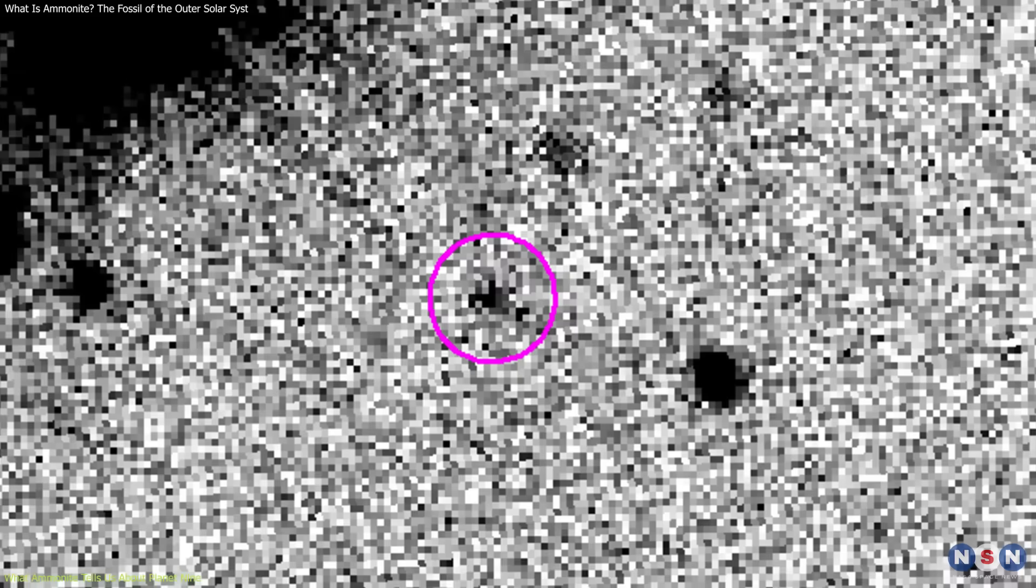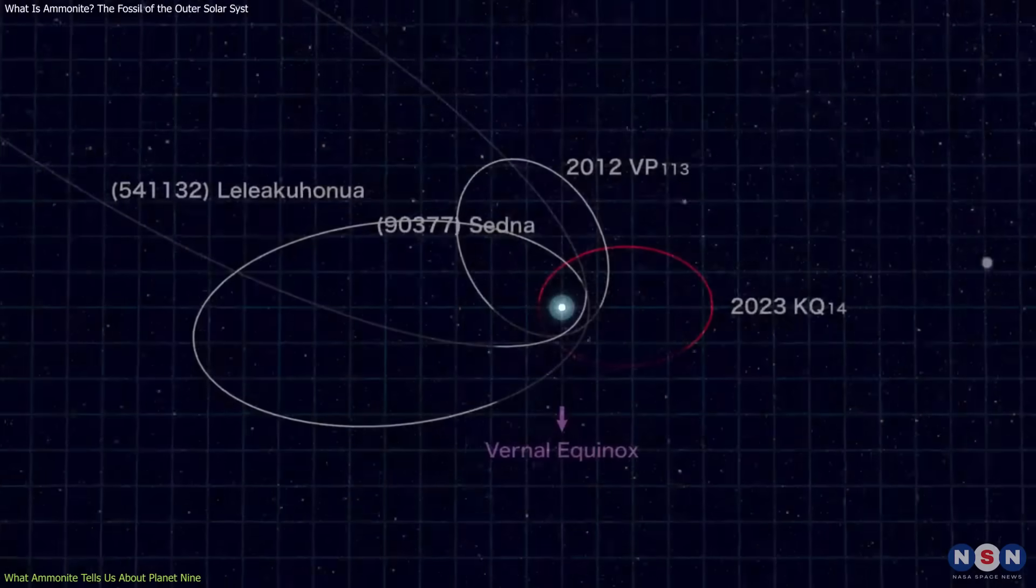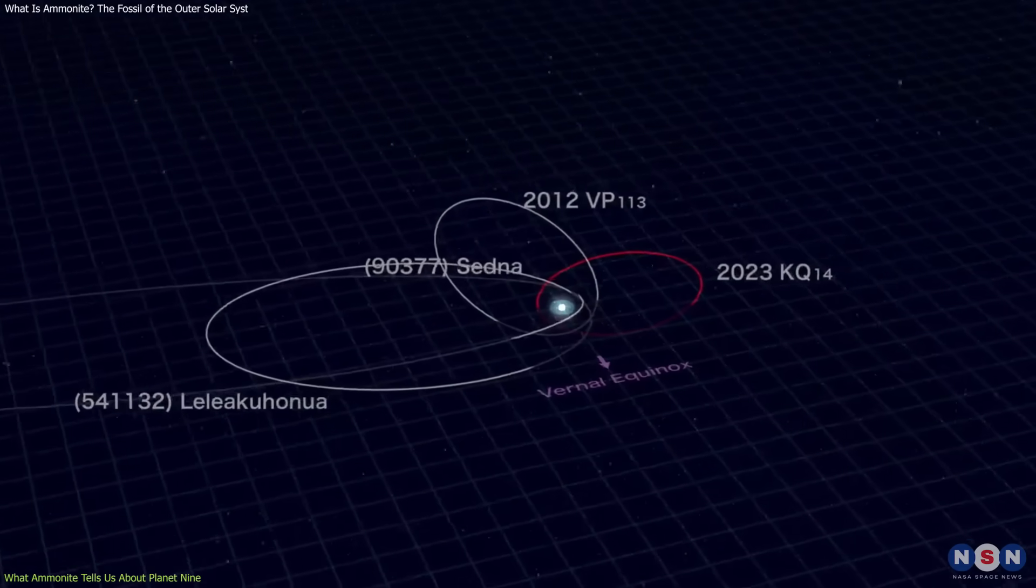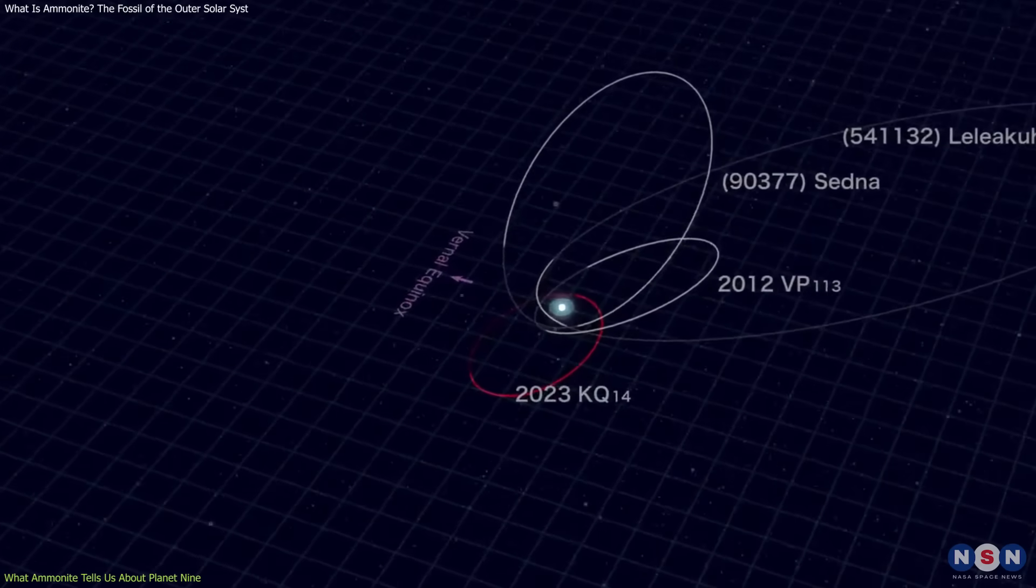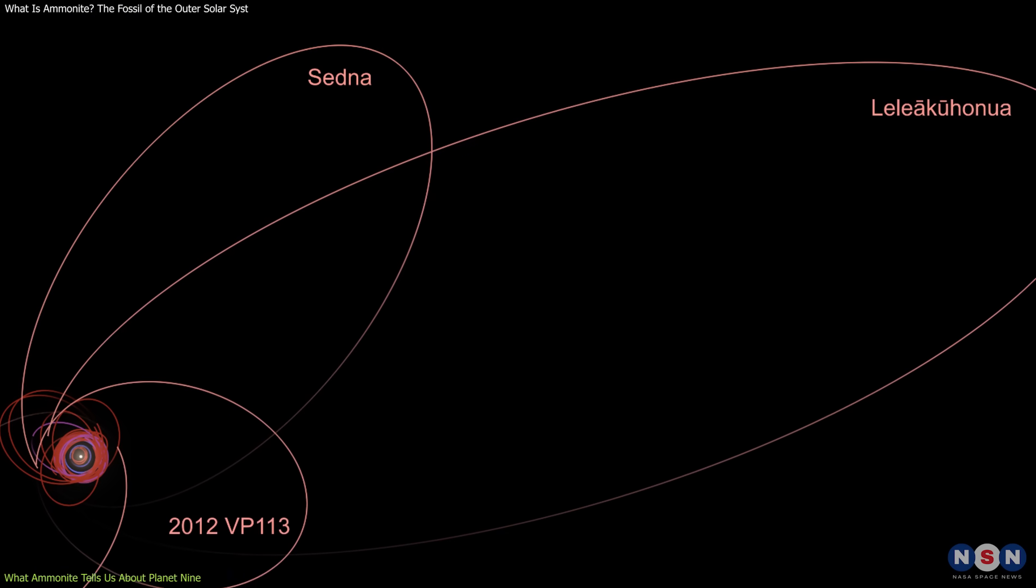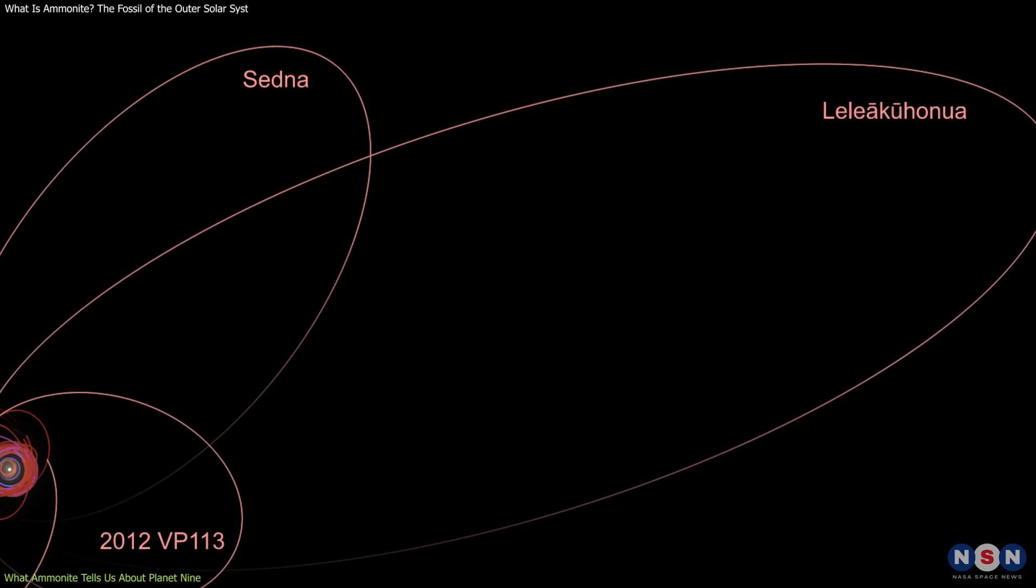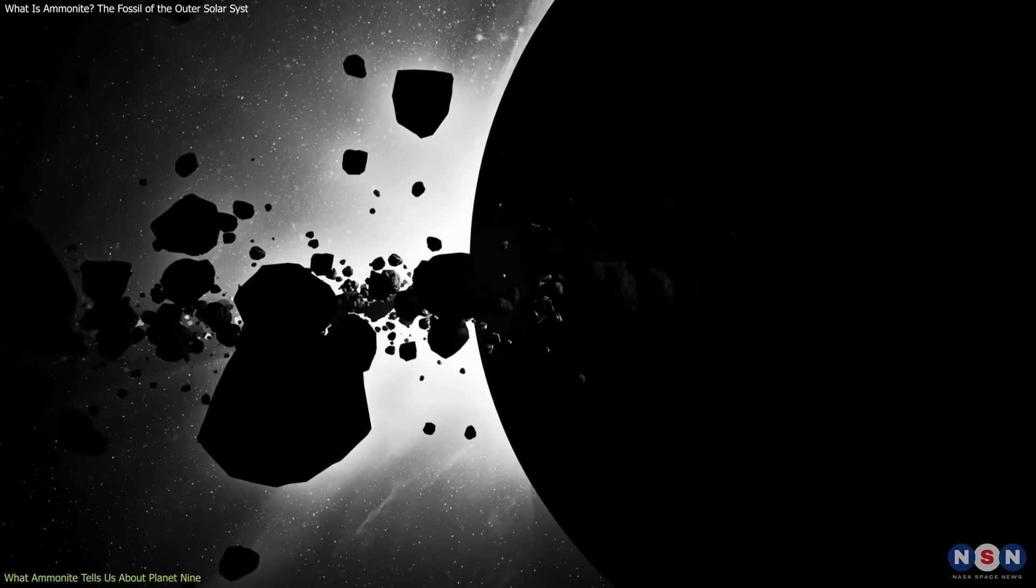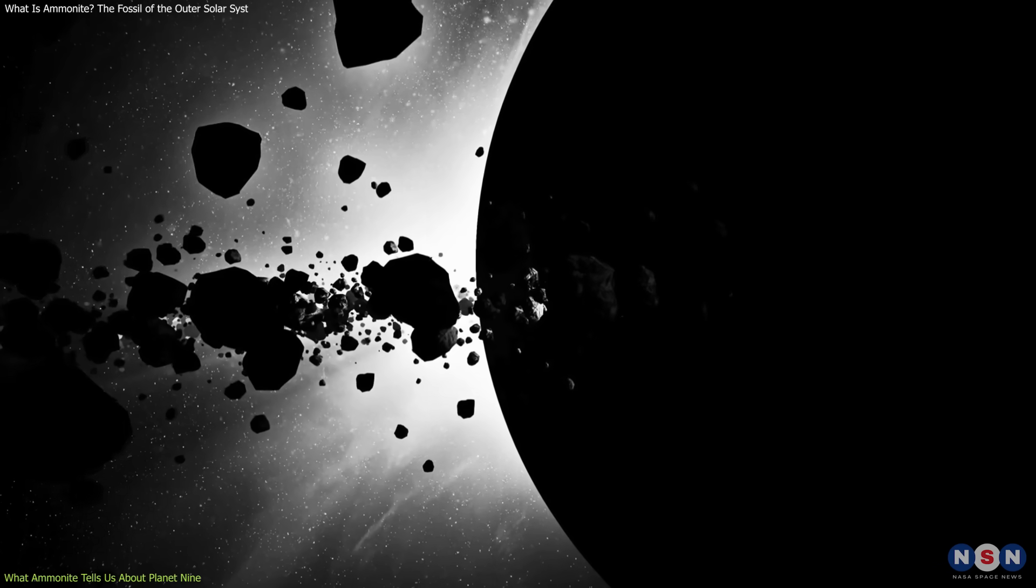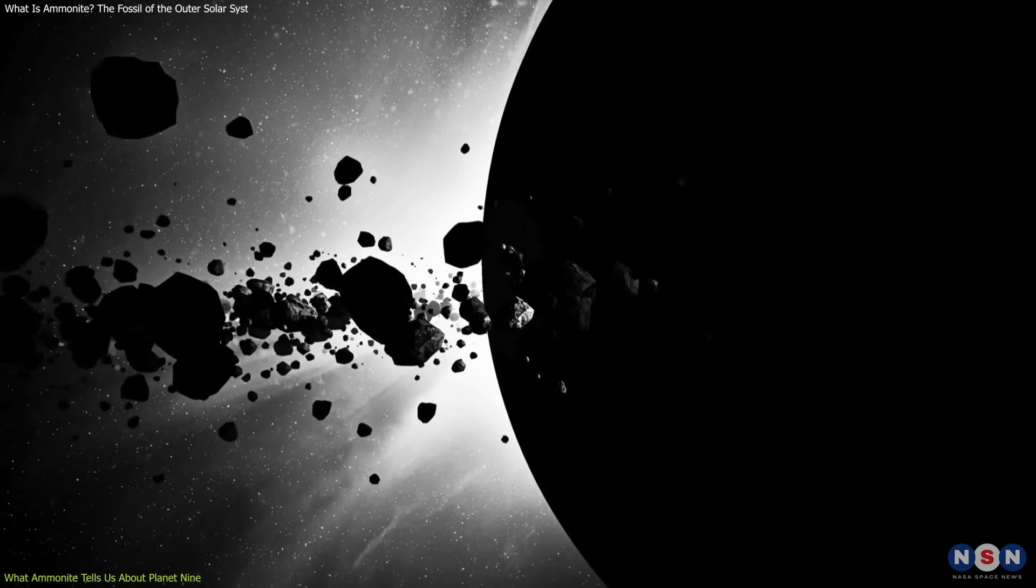But it doesn't follow the expected pattern. Its orbit is misaligned, and in some simulations, even anti-aligned when compared to other sednoids. This means that instead of pointing in the same general direction as the others, it orbits in the opposite direction. It breaks the symmetry that helps support the idea of a common gravitational influence like Planet 9.